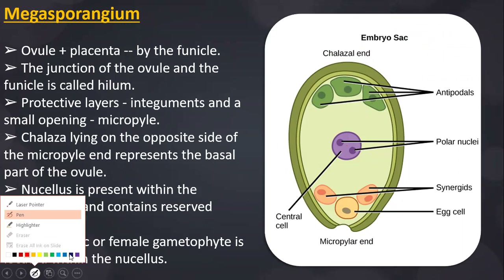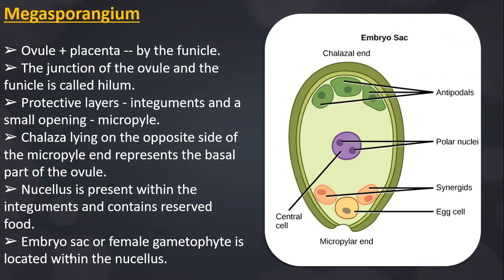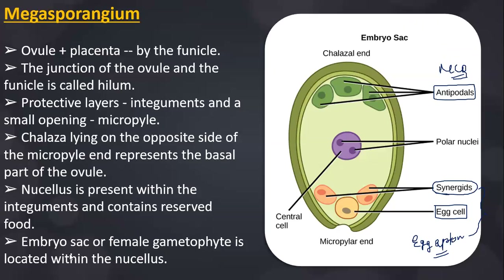In the chalazal region you have 3 main cells collectively known as the antipodal cells. In the micropylar region there are also 3 cells: the large middle one is the egg cell, surrounded by 2 synergids. The synergids and the egg cell together are known as the egg apparatus. In the center you have a secondary nucleus or polar nucleus, known as the central cell.